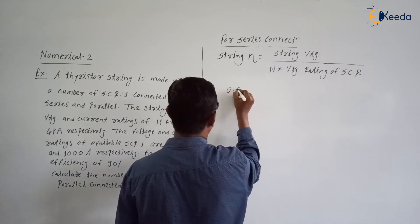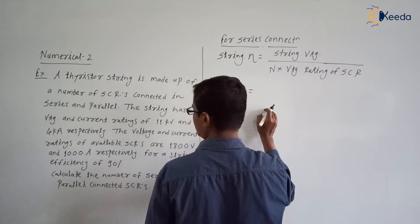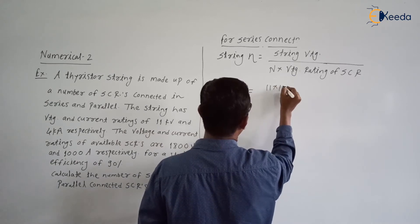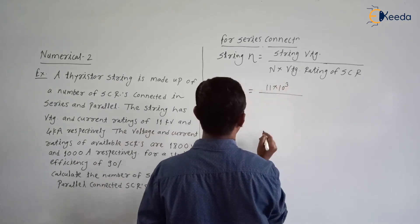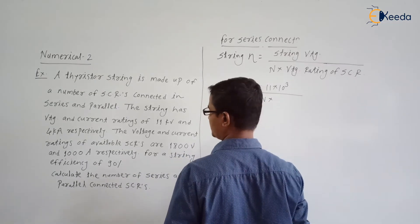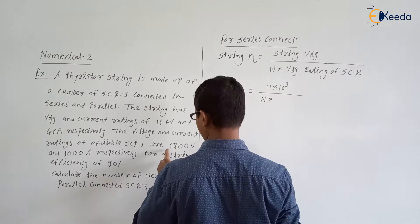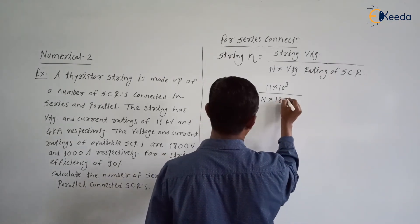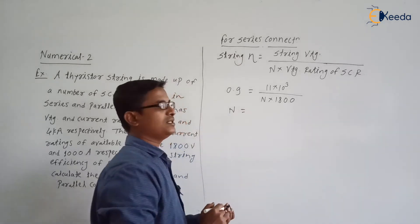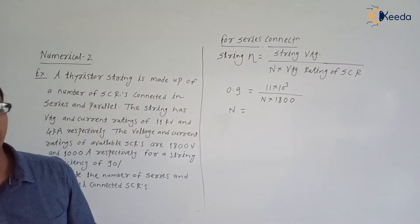So here it is 0.9 equals string voltage 11 kV, 11 into 10 to the power 3, divided by number of SCRs n into voltage rating of single SCR. Voltage rating of SCR is 1800 volts.